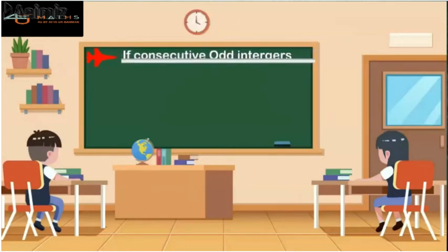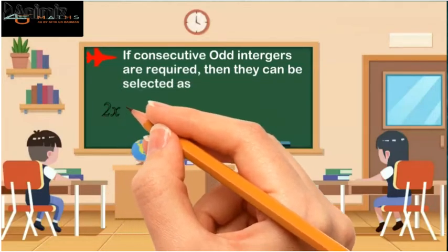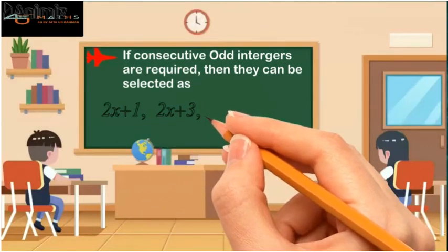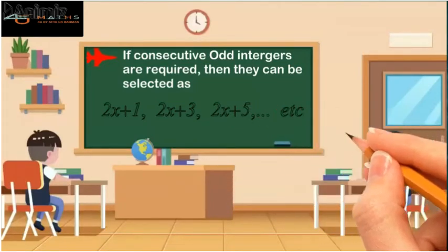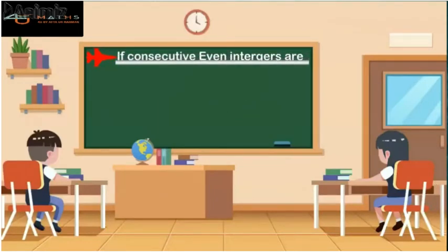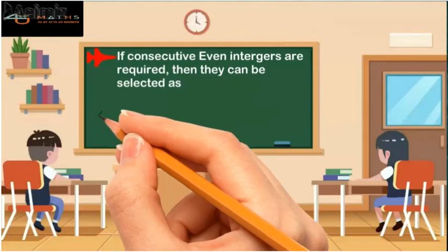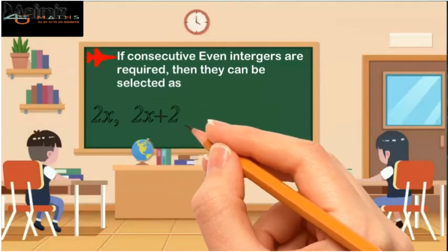Second, if the question is regarding consecutive odd integers, then they can be chosen as x, x plus 2, x plus 2, and so on. Third, if the question is regarding consecutive even integers, then they can be chosen as 2x, 2x plus 2, 2x plus 4, and so on.